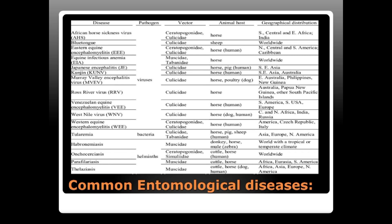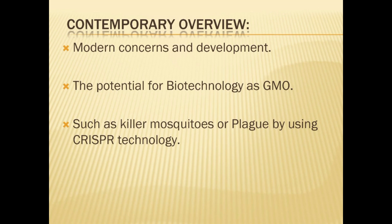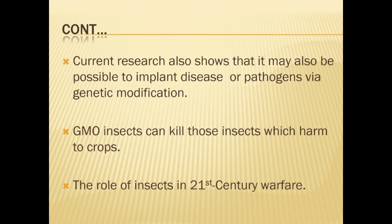In the contemporary overview, modern concern involves the potential of biotechnology and GMOs. United States intelligence officials have suggested that insects could be genetically modified using a technology called CRISPR. Genetically modified organisms — killer mosquitoes — are being modified to curb the spread of diseases like Zika, dengue, and West Nile virus. Current research also shows it may be possible to implant disease or pathogens via genetic modification for potential warfare use in the near future.